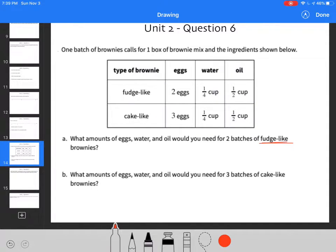If I want to make two batches, I'm just going to double everything. So I would need four eggs, one half cup of water, and one cup of oil.